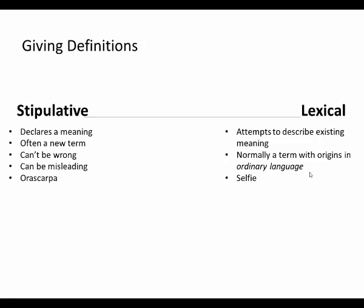And if you look up words in the dictionary, the dictionary definitions are almost all lexical — they're never stipulative. Dictionary writers try to figure out how ordinary people are using words, or if they're specialists, they may try to figure out how specialized communities are using words, and then they try to describe that.